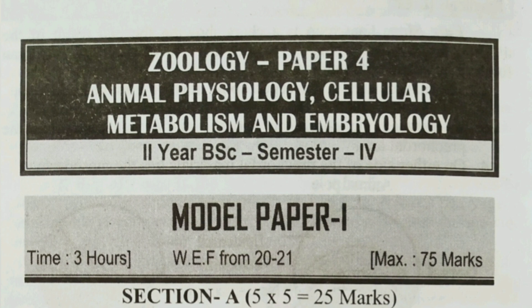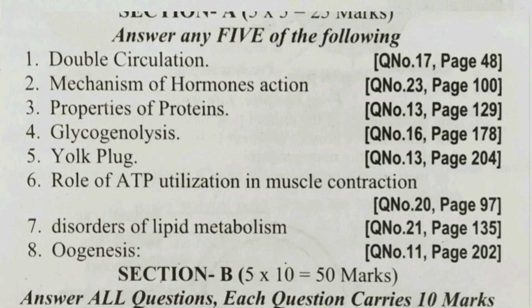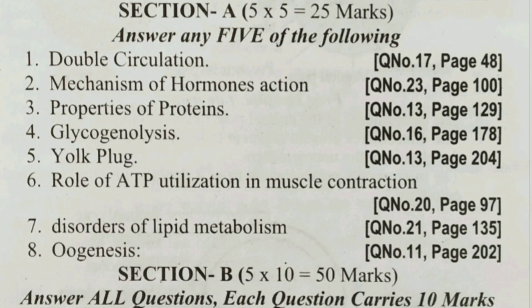So, first model paper 1 short questions: double circulation, mechanism of hormone action, properties of proteins, glycogenolysis, yolk plug, role of ATP utilization in muscle contraction, and disorders of lipid metabolism.